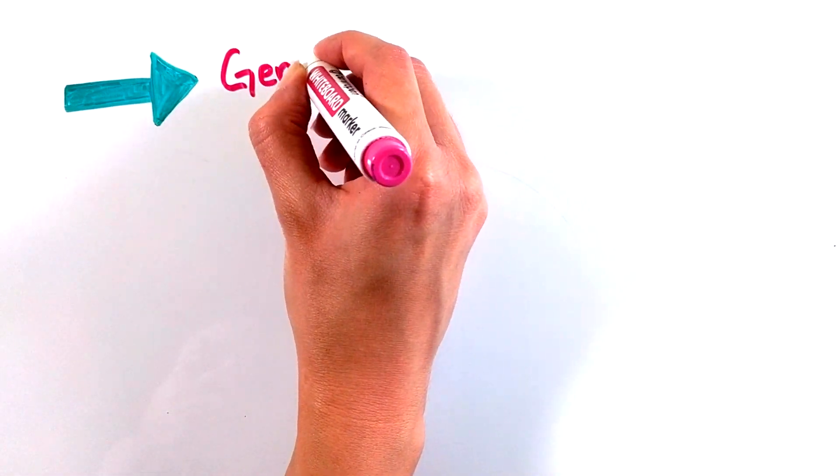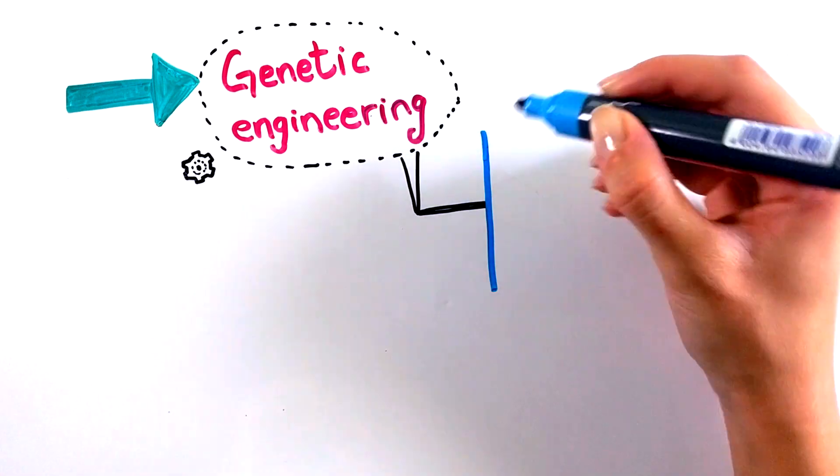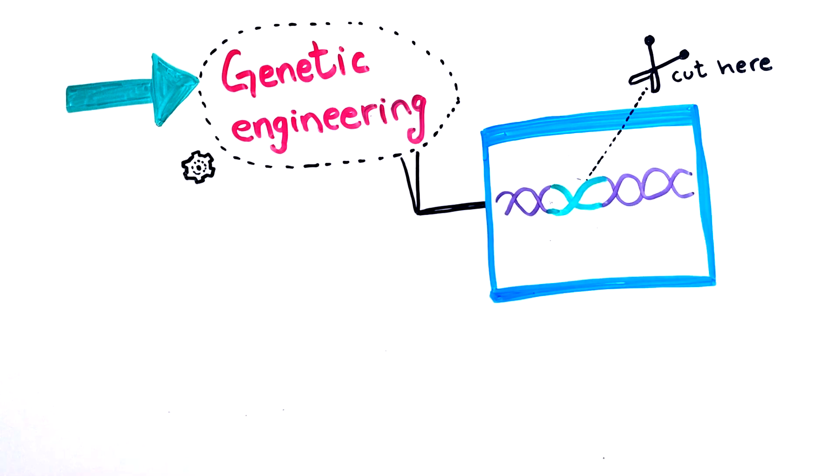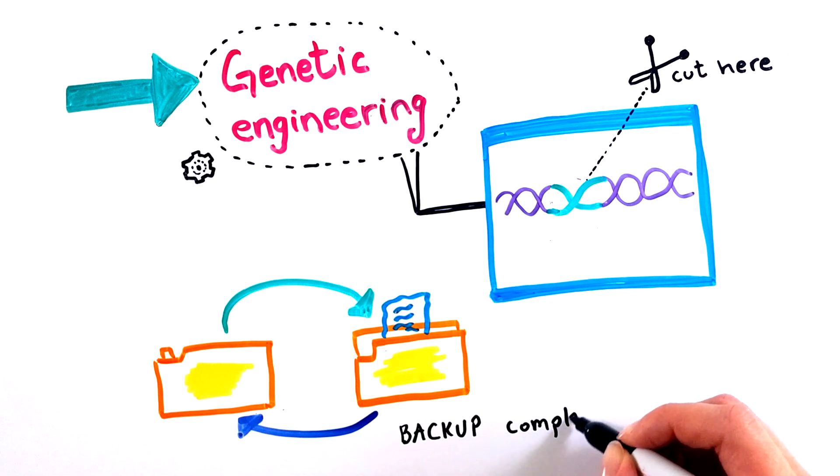This is exactly where genome editing comes in. Genetic engineering is a technology which allows us to edit our DNA. It is like cutting the misspelled DNA parts and combining them with properly written DNA code, sort of like a human spell check. This way the information could be recovered, which will enable normal cell function.